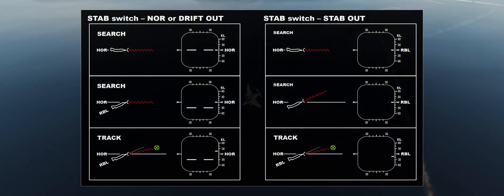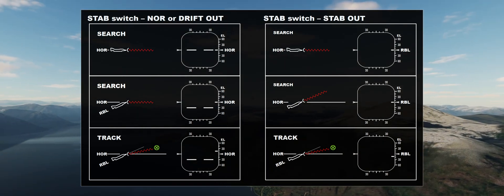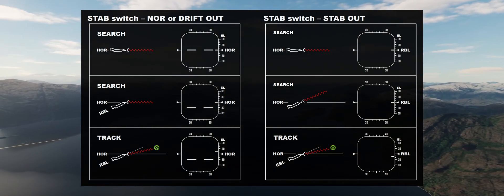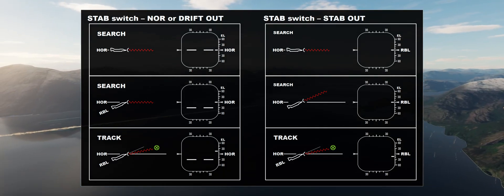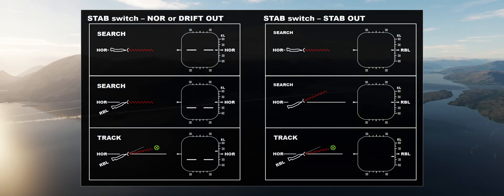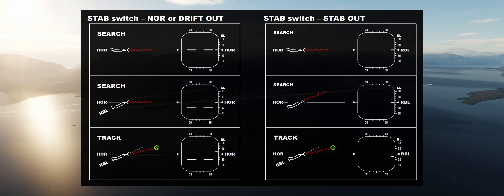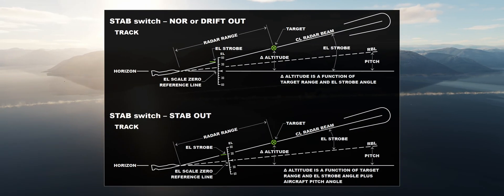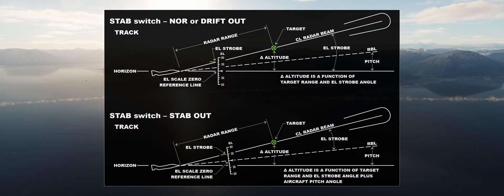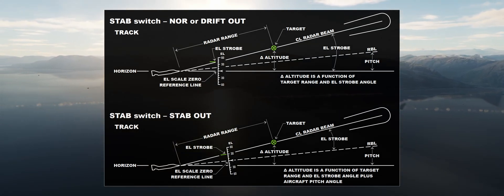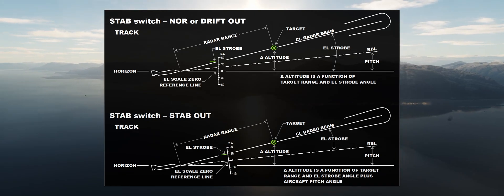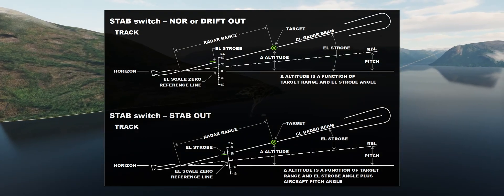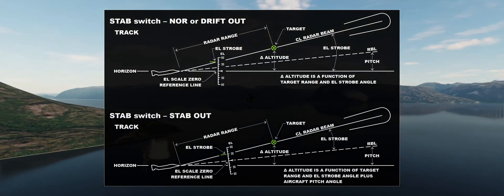The three options available are Drift Out, Gnaw, and Stab Out. With the first two, the antenna is stabilized. Therefore, 0 degrees of antenna elevation corresponds to the horizon, and the display shows the horizon line symbology. When tracking, both Drift Out and Nor show the target's relative elevation on the EL strobe. With the switch in the Stab-Out position, the horizon line is not displayed, and the EL strobe shows the antenna elevation angle from the Phantom's attitude, not the horizon.